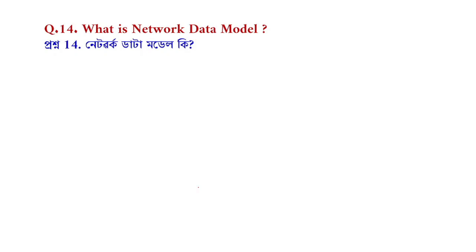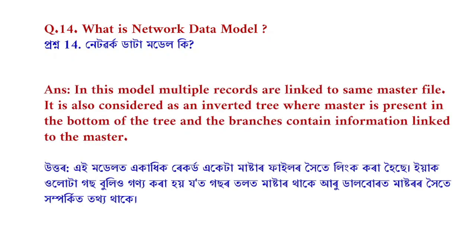Question number 14: What is the network data model? In this data model, multiple records are linked to the same master file. It is also considered as an inverted tree where the master is present at the bottom of the tree and the branches contain information linked to the master.